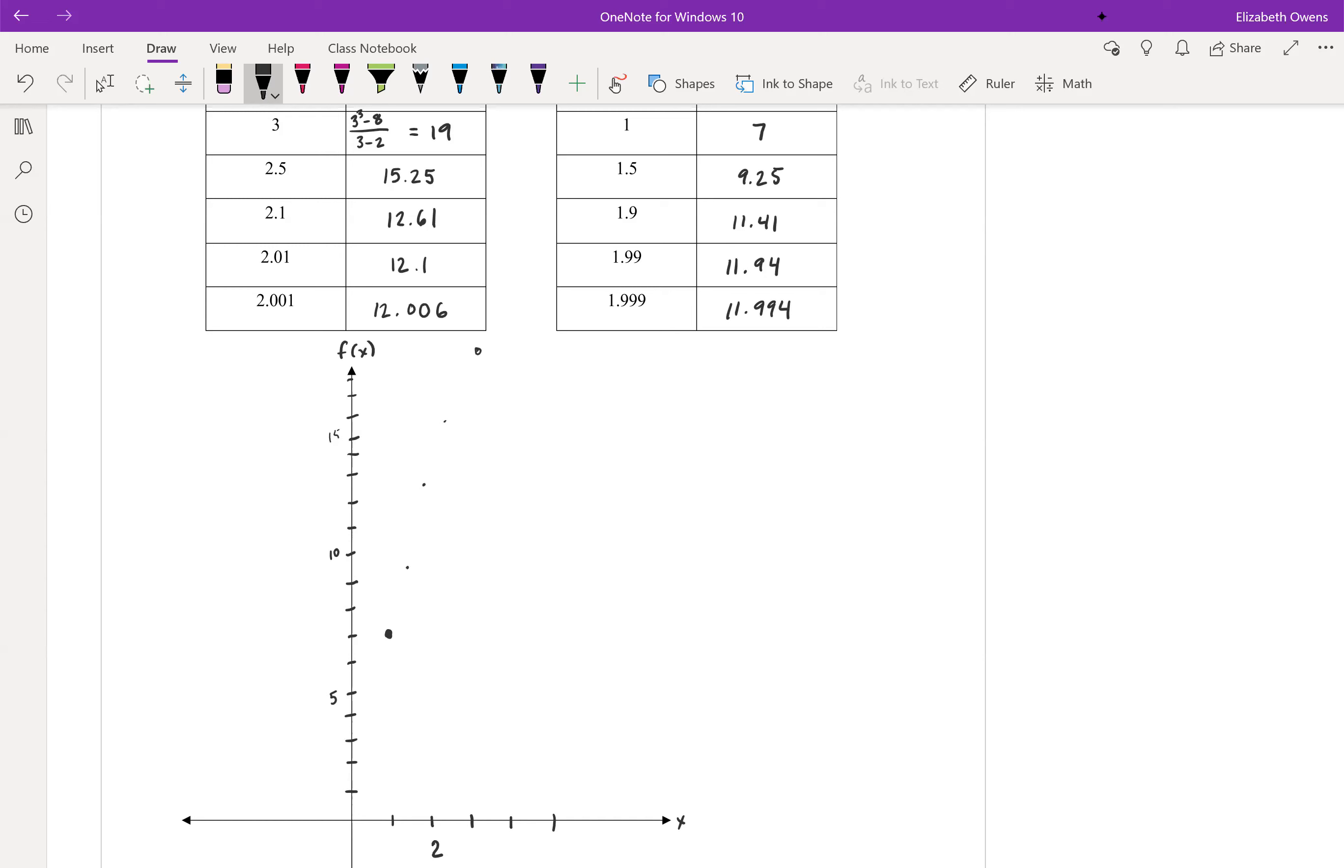But we're basically plotting these points, and as we get closer to x equals 2, like in this region here, notice what the y value is getting closer to. The y value is getting really close to 12. So our f of x value, what the function is doing, what it's approaching as we get close to 2 on the x-axis is 12 on the y-axis.